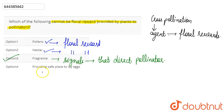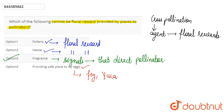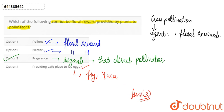The last option is providing a safe place to lay eggs. This is correct — it is seen in the case of the fig and the yucca plant, which nourish and shelter the eggs of different species. So options one, two, and four can all be floral rewards, but not option three. Hence, option three is the correct answer.